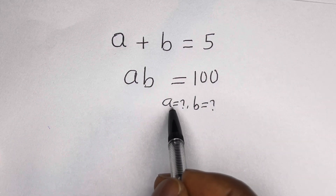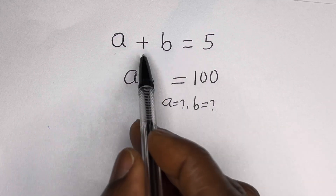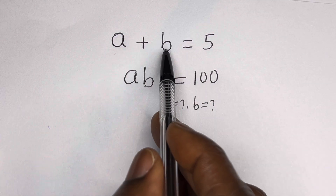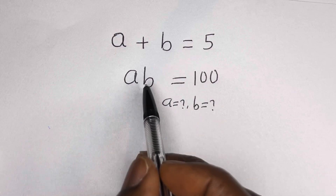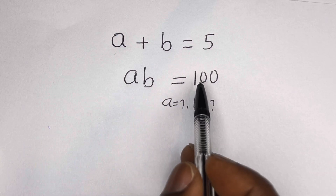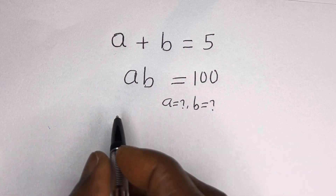Hello. How to solve for A and B in this equation: A plus B is equal to 5, AB is equal to 100.